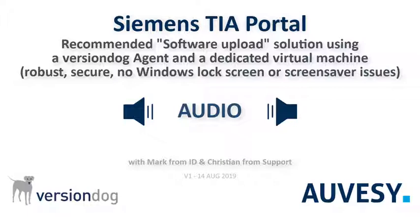And that mouse click is quite important, isn't it? Because that's where things can go wrong. Without the mouse click, your job execution will fail. What can go wrong? There are several possibilities. One of them is someone moves the mouse at the wrong moment, or the screen is just locked, or the screen saver is switched on. So any time the screen is locked or the screen saver is on, this mouse click will not happen.